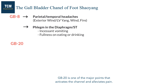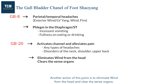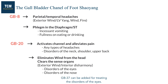GB20 is one of the major points that activates the channel and alleviates pain. It treats any type of headache and also treats disorders of the neck, shoulder, and upper back. Another action of this point is to eliminate wind from the head and clear the sense organs. Whether it is exterior wind or interior disharmony, disorders of the eyes and nose can be treated with this point. GB37 can be added for treating disorders of the eyes.